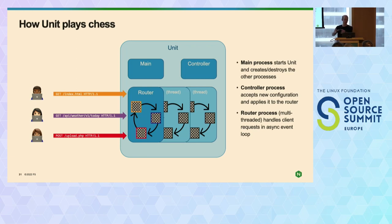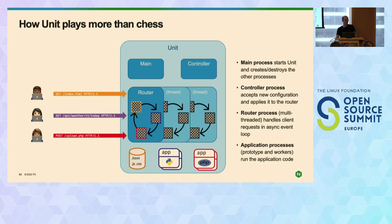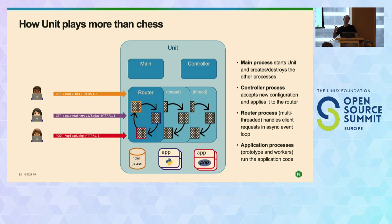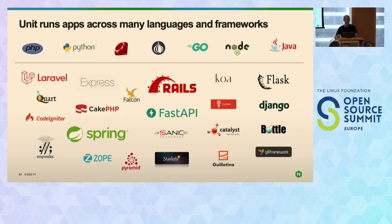We've got a multi-process and multi-threaded architecture. We've got the main process which creates and destroys the others, the controller process which supplies config to the router, and the router which handles the application code and requests. Unit also directly controls, manages, and scales up and down those application processes. If you're running Python, PHP applications, or whatever, and if you put a Docker container around this, you've got a single daemon but multiple applications. You don't have to jump through hoops with supervisord or something else to make complex entry points for multiple daemons. You have one daemon and Unit takes care of the rest.